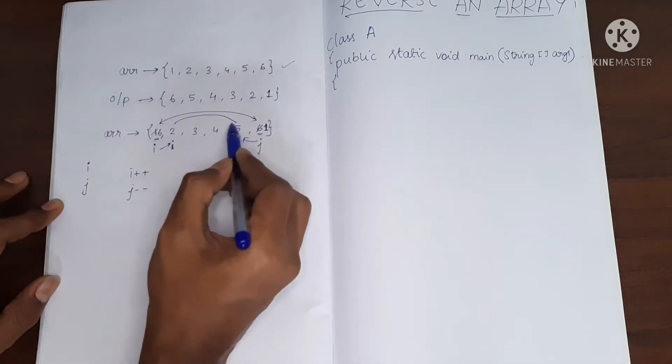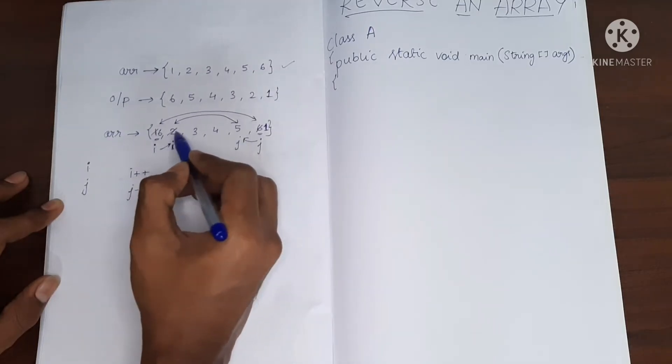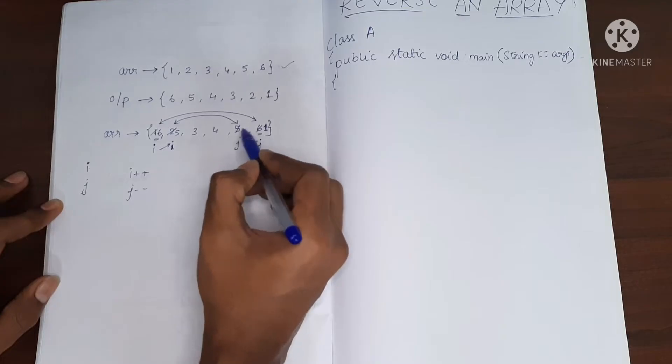i will be pointing to here. And then I'll do j minus minus, j will be pointing to this location. Now I'm going to again swap this. So now this will become five, this will become two.